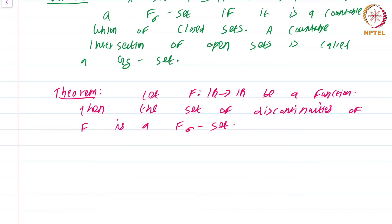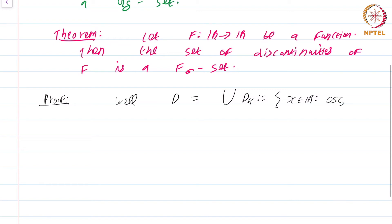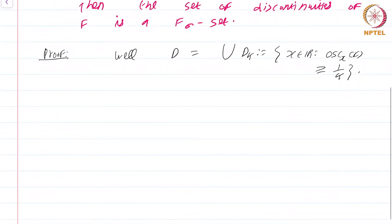So you cannot have arbitrary sets as the set of discontinuity. The set of discontinuities has the precise structure of a countable union of closed sets. The proof is rather simple. The set D of discontinuities is just the union of D_k's, where D_k is the set of points x in R such that the oscillation of f at x is at least 1/k. Now, each D_k is actually closed.